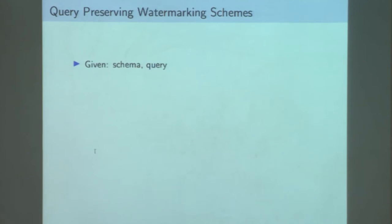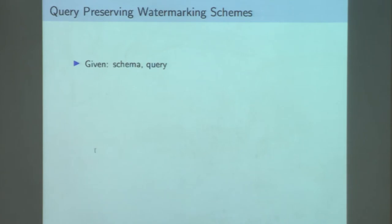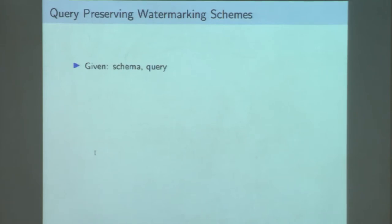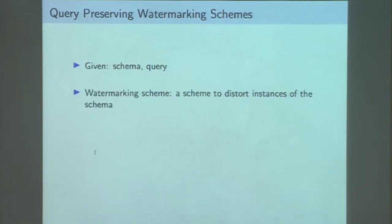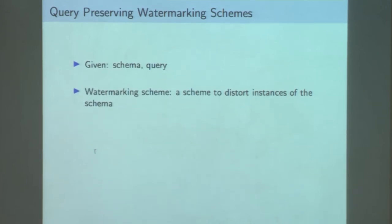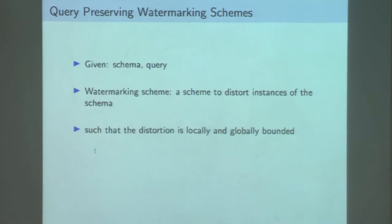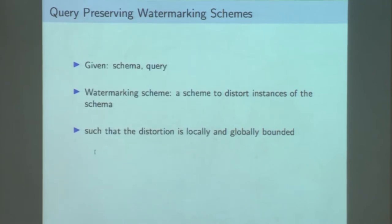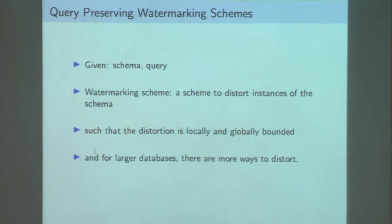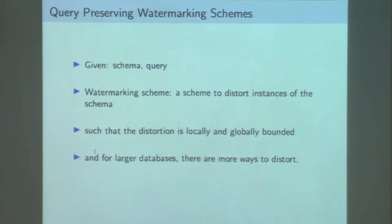Let me give a semi-formal definition of watermarking databases. As input you are given a database schema — the list of relations and their arities — and a query. The goal is to come up with a scheme to distort instances of this database schema. This scheme should ensure that local distortion and global distortion are bounded. Another goal is that for larger and larger database instances, you want to be able to produce more and more distinct distortions.